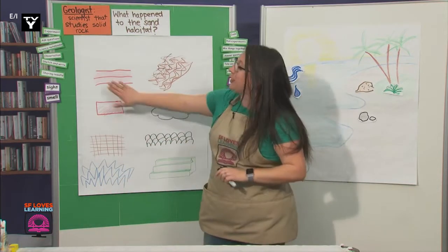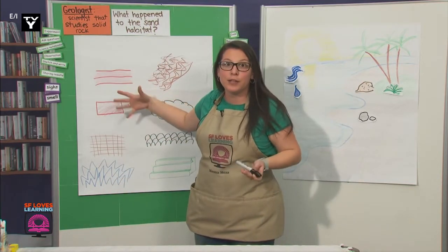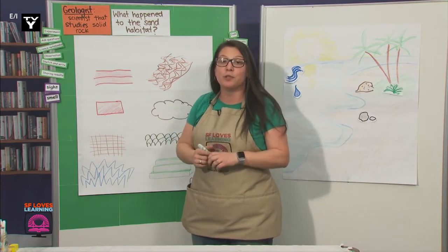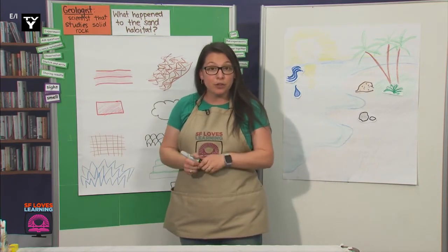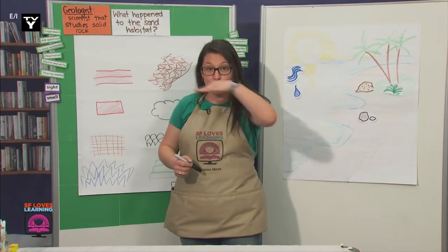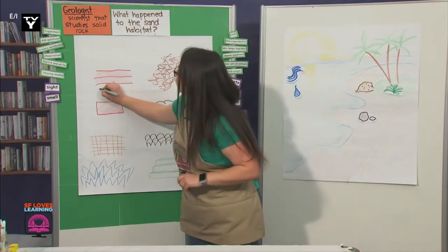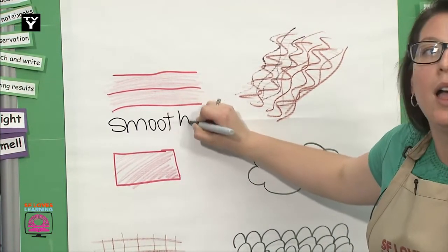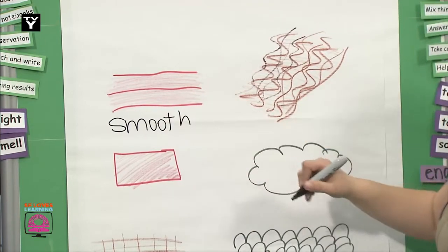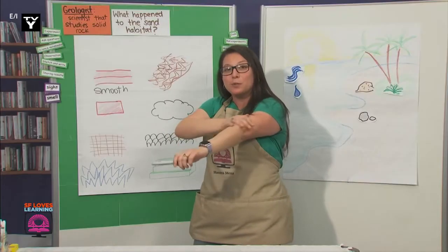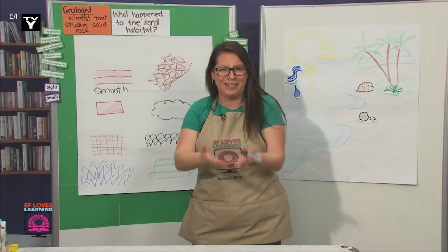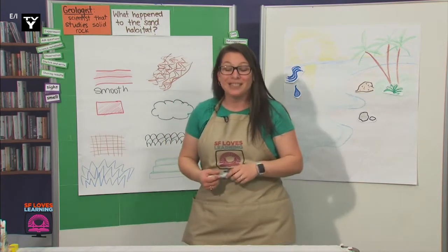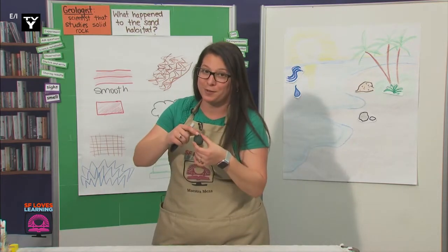The first one I have here represents smooth. The first rock that I showed you is smooth. Can you think of other things that are smooth? Our skin can feel smooth. Apples and even cups — those are all correct. Some rocks can also feel smooth.